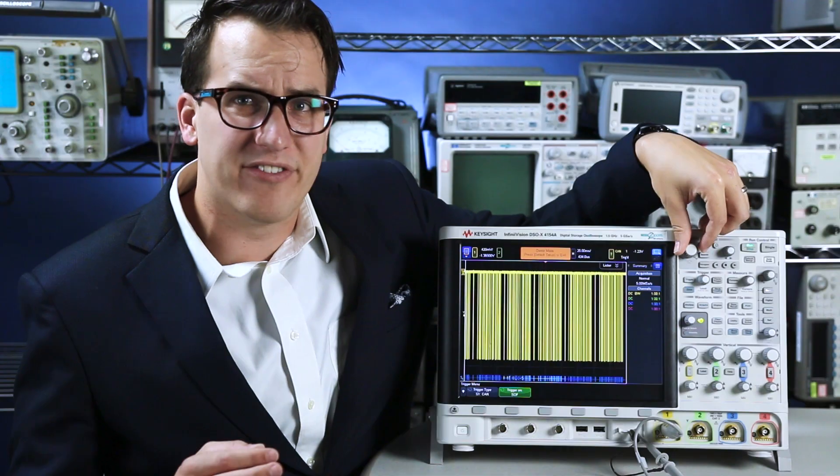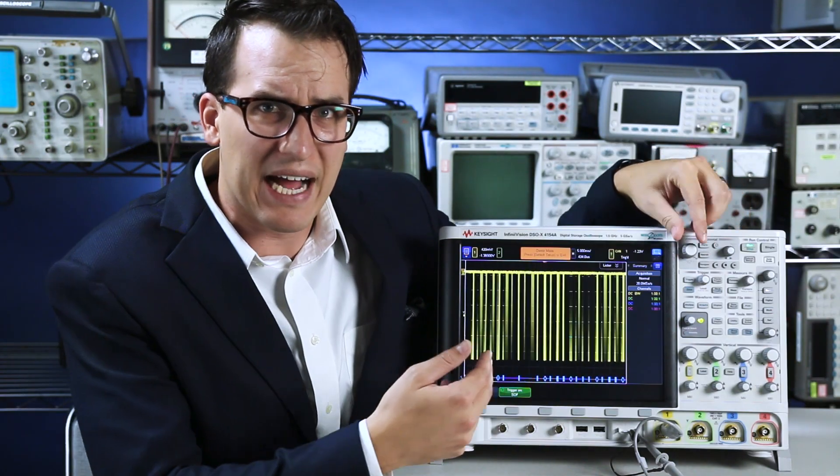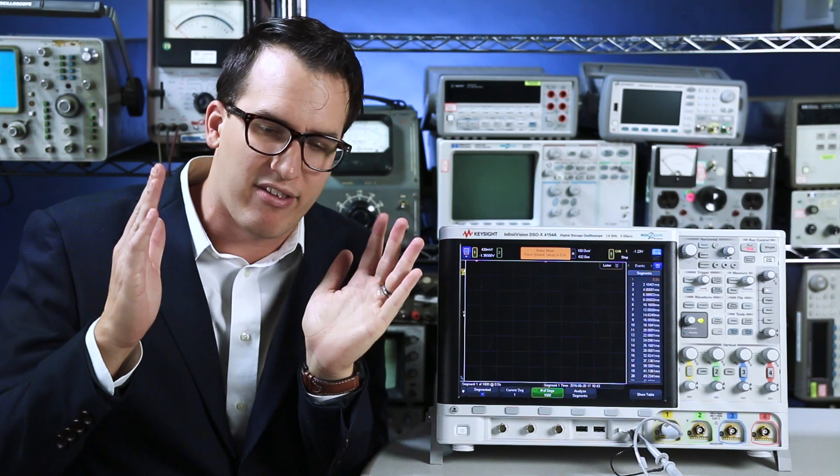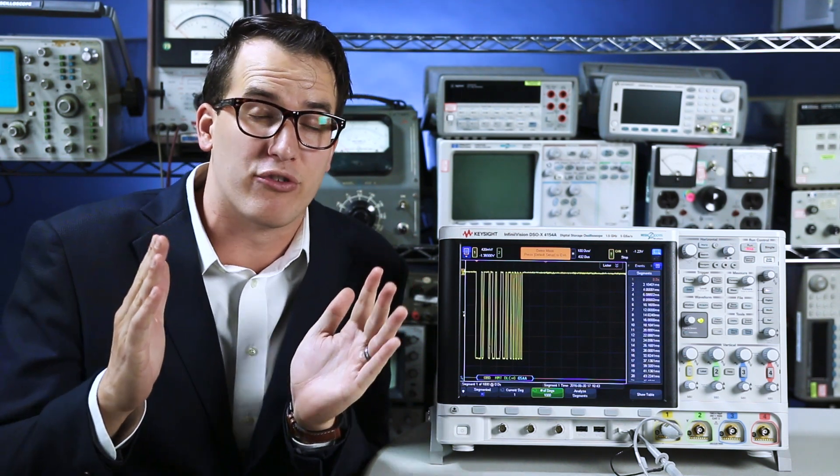And now you can see my packet has stabilized on the screen and I have packets coming through. And you'll notice that there's a lot of dead time on my signal here between packets, so one thing you can do is use segmented memory to just capture packets. I'm going to turn that on,